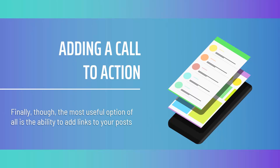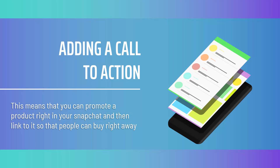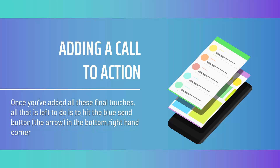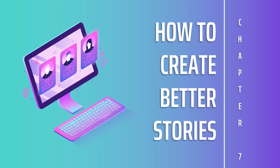The most useful option of all is the ability to add links to your posts. This is one area where Snapchat drastically outperforms Instagram — whereas Instagram requires users to have 10,000 followers or a verified account before they can use links through the swipe-up method, Snapchat lets you add any URL you like right away. This means you can promote a product directly in your Snapchat and link to it so people can buy right away — an ideal way to convert Snapchat momentum into sales. Once you've added all the finishing touches, simply hit the blue send button (the arrow in the bottom right corner) and choose whether to send to someone you know or add it to your story.